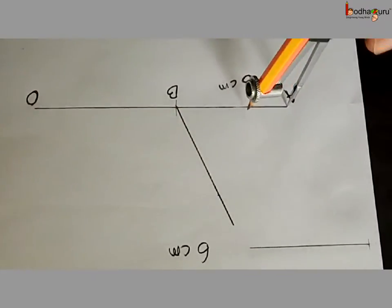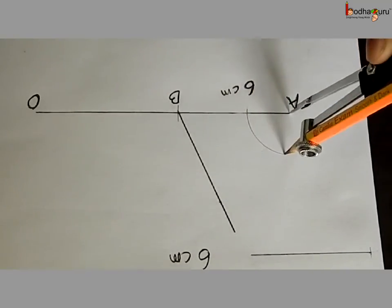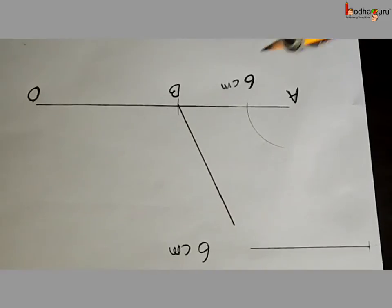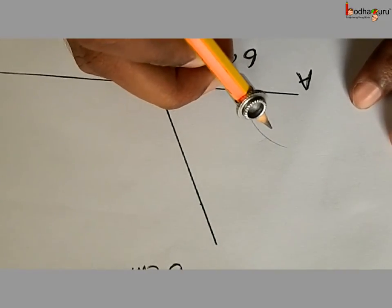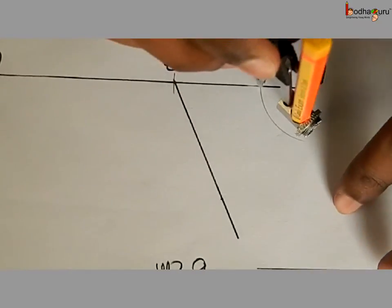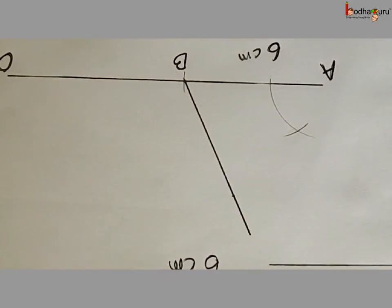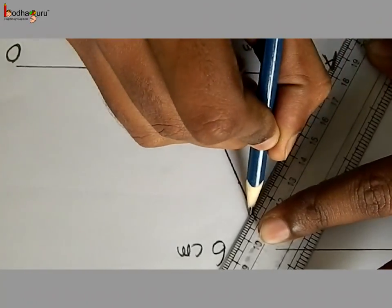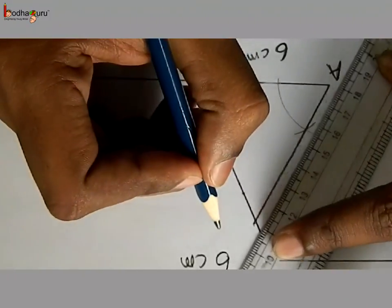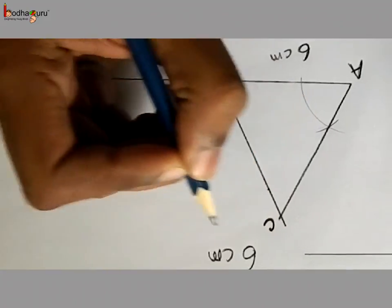We can draw 60 degrees without a protractor. Take any measurement in the compass and draw an arc with point A as the center. Without losing that measurement, put the needle at the point where the arc intersects AB and draw a small arc that intersects the previous arc. We get a point where the two arcs intersect each other. Joining A with that point and extending it completes the triangle, giving us triangle ABC.